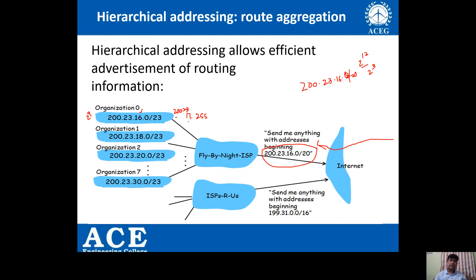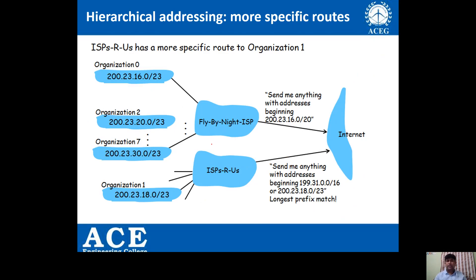Send anything with an address beginning with 200.23.16.0 — once the ISP receives a datagram with that particular IP address it will forward it to the appropriate device in the network. We have a second kind called ISP-used specific routing, where there is a more specific route to particular organizations. For example, the organization with starting IP 200.23.18.0 up to 200.23.19.255 requires more specific routing.